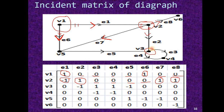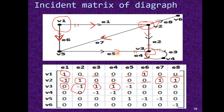Now consider vertex v3. There are a total of 4 edges: e2, e3, e4, e5. Edge e1 is not incident on v3, so we write 0. Edge e2 is incoming, so we write minus 1. Edge e3 is outgoing, so we write plus 1. Edge e4 is also outgoing, so we write plus 1. Edge e5 is incoming, so we write minus 1. All other edges are 0. In this way we can calculate the incidence matrix of a digraph using three rules: if an edge is outgoing, write plus 1; if incoming, write minus 1; otherwise write 0.